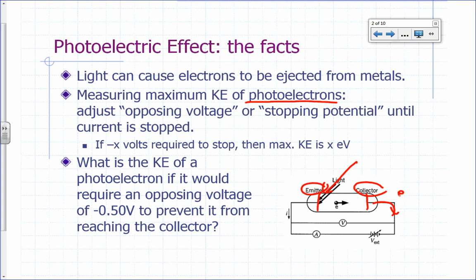So there's going to be a flow of electrons. Notice that the direction of the conventional current is opposite the direction of the electron flow. But the idea is you're going to get a current if there are electrons ejected.